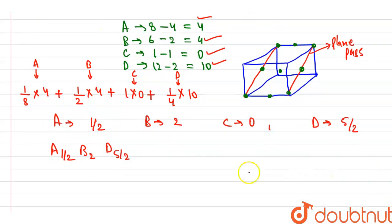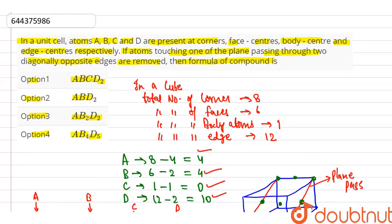So we multiply by 2. Then A is 1/2 into 2, B 2 into 2, and D 5/2 into 2. Then our formula is AB4 and D5. So our correct option is option number D, that is AB4D5.